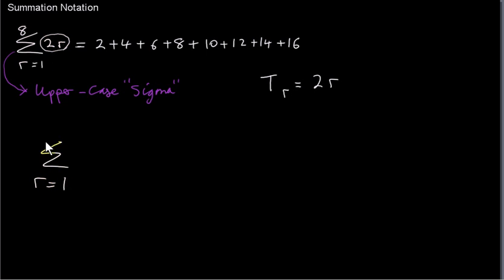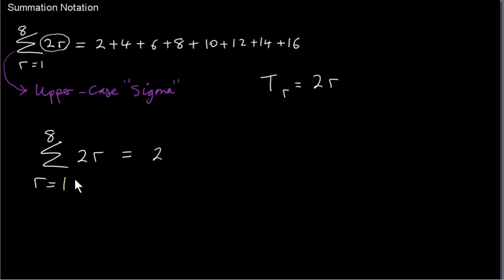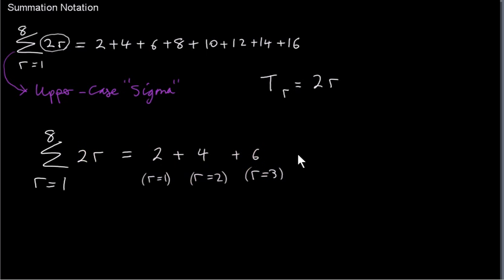What does that mean? We start by looking at the expression and replace r with 1, so we get 2 times 1, which is 2. Then we increase r by 1 step to get the next term: replacing r with 2 gives 4. We sum these terms, then the term for r equals 3 gives 2 times 3, which is 6, and we keep going until r equals 8, giving 2 times 8 which is 16.